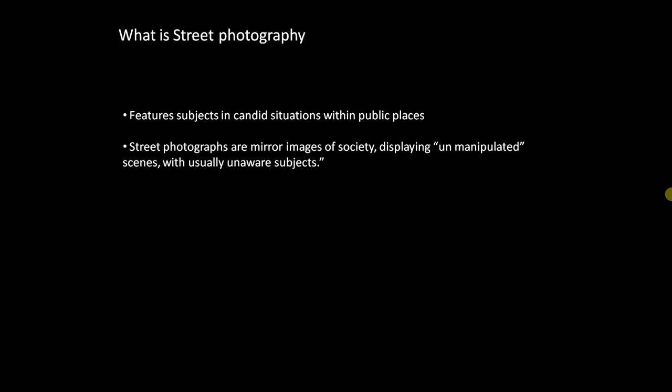So let's start with what is street photography. It is a type of photography that features subjects in candid situations within public places. Street photographs are mirror images of society, displaying unmanipulated scenes with usually unaware subjects. It is all about storytelling — very different from other forms of photography. Instead of being about capturing the perfect balance of light and color, it's about capturing the human condition in streets.